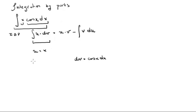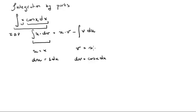Therefore, now you need to find du and v. The du is the derivative of x, which is 1 dx, and v is the integral of cosine of x, which is sine of x. Now that you have these four items, you can build it up.